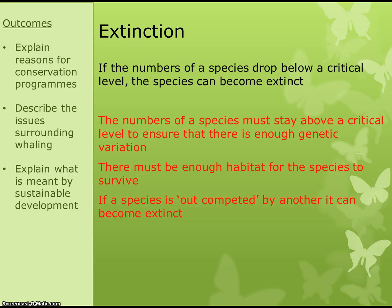Next, extinction. If the number of a species drops below a certain level, the species can become extinct — meaning there are none of them left. The example of the dodo: it's now extinct because sailors ate them all. For the higher tier, you need to know that numbers must stay above a critical level to ensure enough genetic variation for the species to stay healthy. There must also be enough habitat for the species to survive, and a species can die out if a new species is introduced that out-competes it — for instance, if rats eat all the dodo's food, the dodos die.